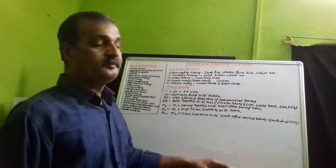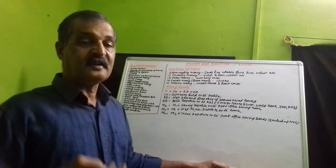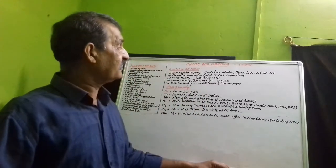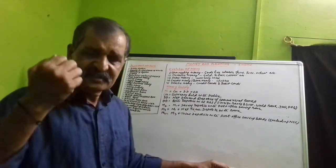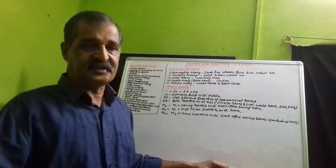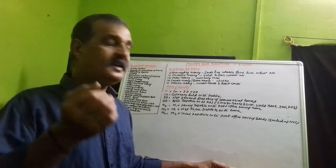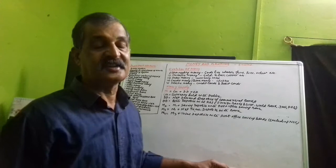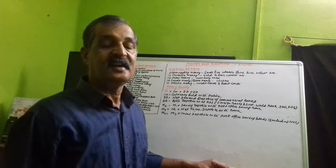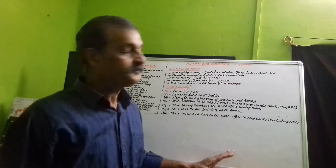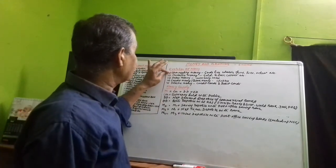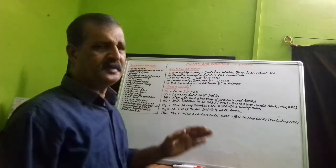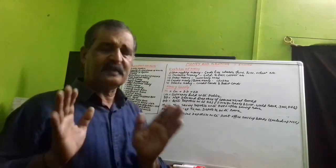Goods के रूप में utensils का use होता था, fruits का use होते थे, उसमें rice use होते थे, wheat use होता था, salt use होते थे — इनको medium of exchange की रूप में लोग use करते थे, lending का count करते थे। इसलिए इसको कहा जाता है commodity money — this is the evolution of money during the barter system.